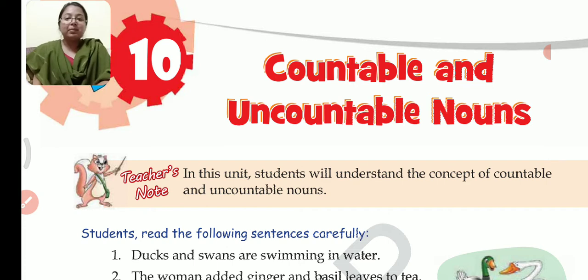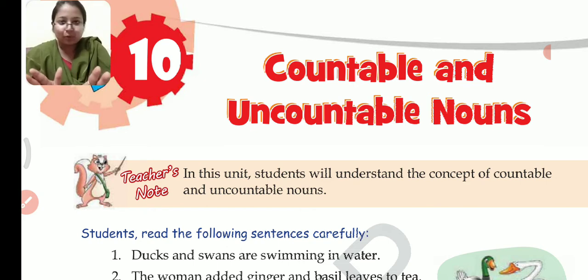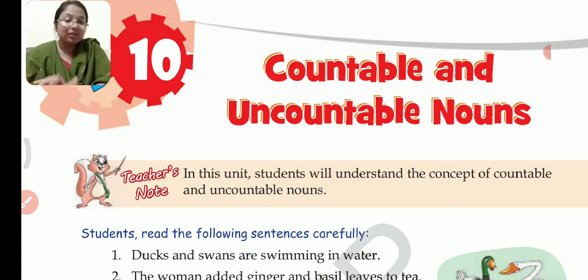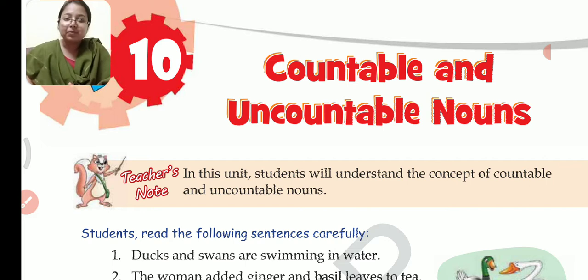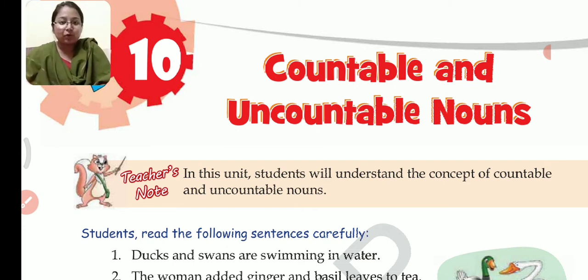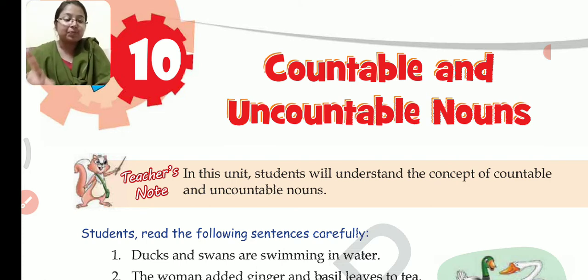Now let me give you examples of uncountable nouns. Salt — can you count salt? No, it's not possible. Similarly, sugar — can you count sugar? Water — no, not possible. Hair — can you count your hair? No, it is not possible. So hair is also uncountable. Water — can you count one water, two water, three water? No, you cannot. So water is uncountable. But if I say one glass of water or one bottle of water, then that can be counted. So only water is uncountable, but glass of water or a bottle of water is countable.